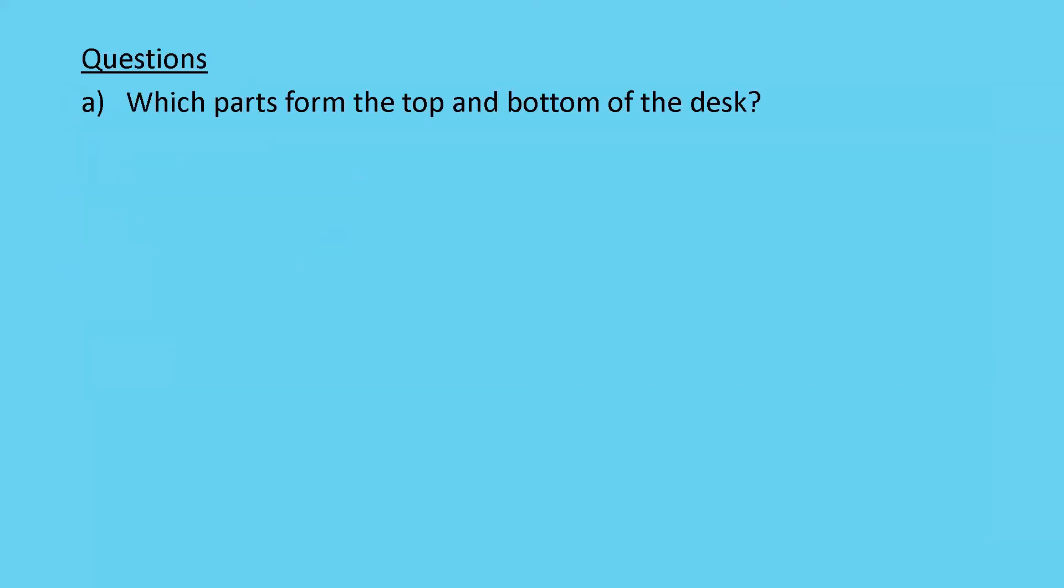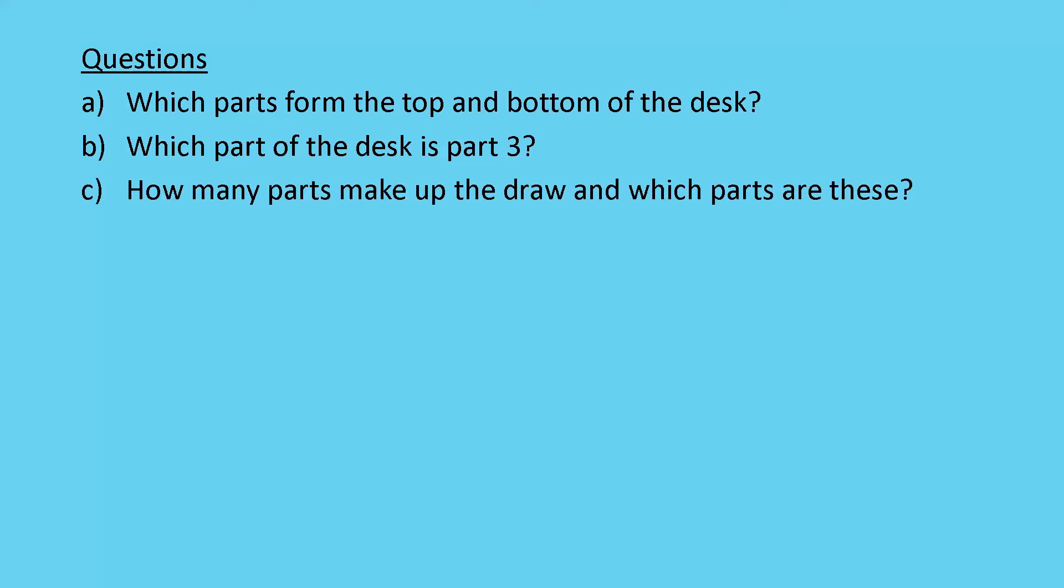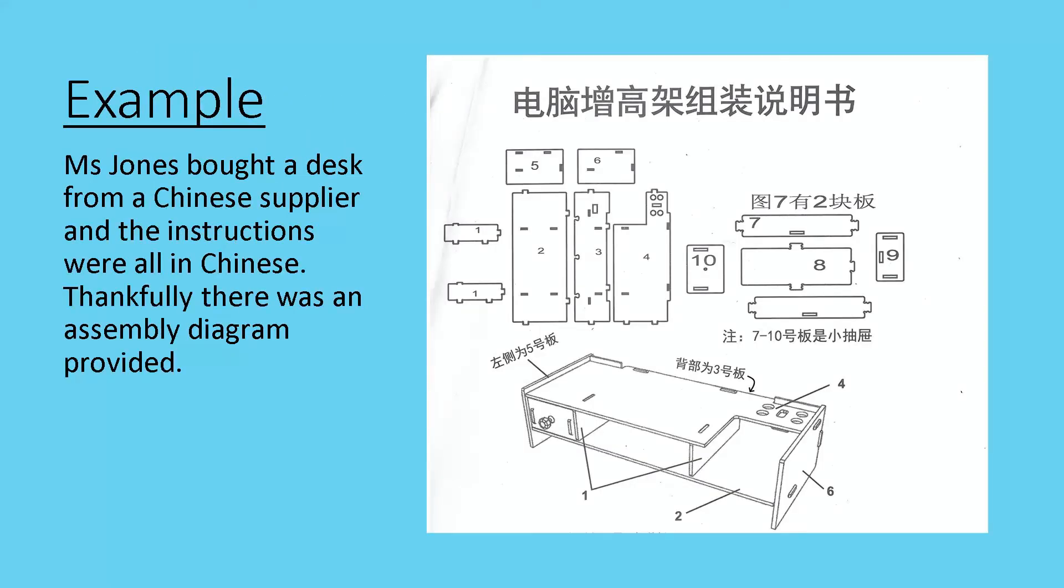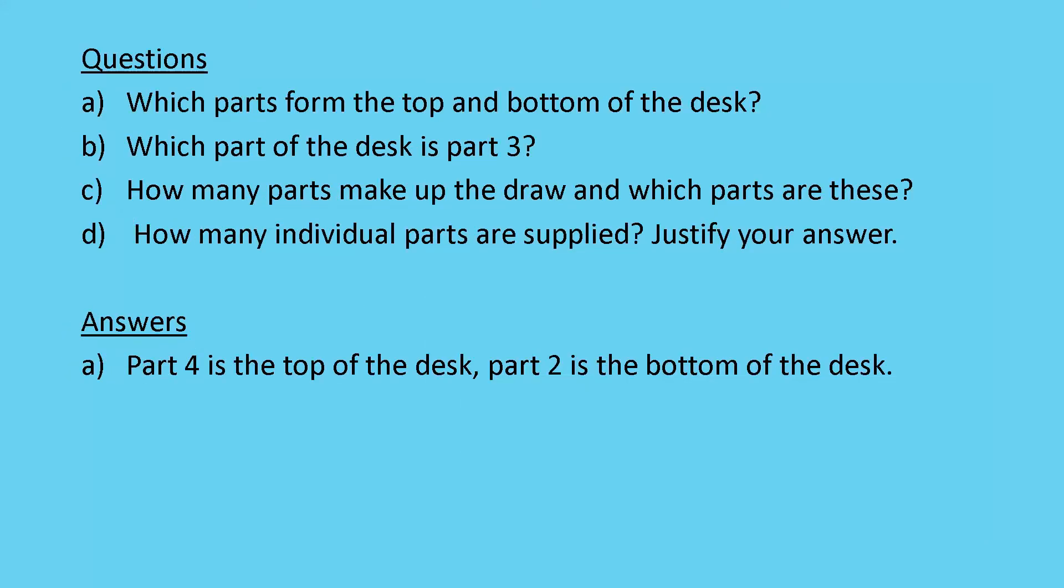Okay, so a couple of questions on this. Which parts form the top and bottom of the desk? Which parts of the desk is labeled part 3? How many parts make up the drawer? And which parts are these? How many individual parts are supplied? Justify your answer. So, let's take a look at this thing again. They want us to find which parts form the top and bottom of the desk. So if I look at the second picture there, you can see that the top part has a little 4 arrowed towards it, and the bottom part is number 2. So we can say part 4 is the top of the desk, part 2 is the bottom of the desk.